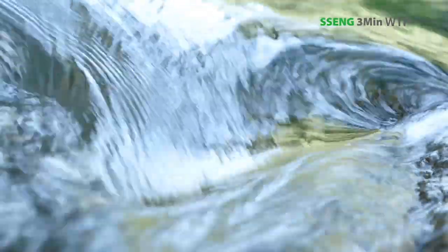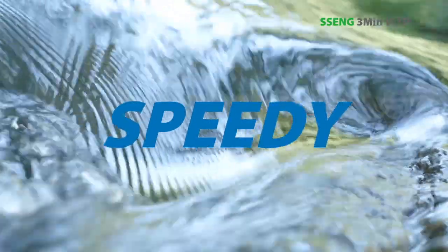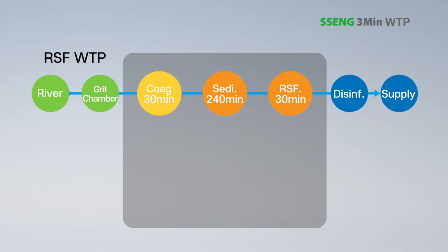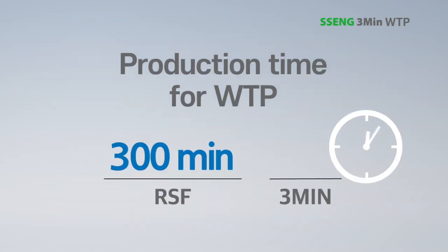Sang's fine fiber filter dramatically shortens drinking water production time. Conventional RSF WTP takes 5 hours of mixing, coagulation, sedimentation, and sand filtration. Meanwhile, Sang's fine fiber filtration takes only 3 minutes, which is why it's called the 3-minute WTP.